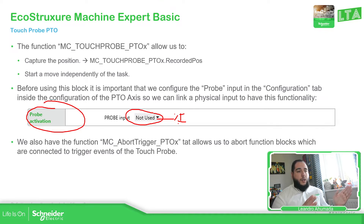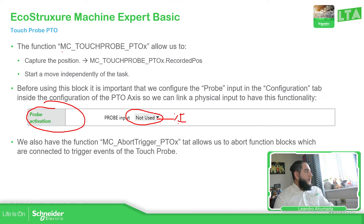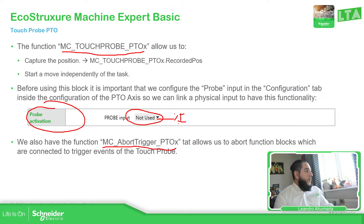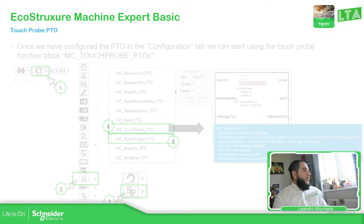When you select the Proof, you can specify which action you can do when it reaches or not. Along with this MC Touch Proof underscore PTO, which is the function for the Touch Proof, you have the Abort Trigger. In case there is an error or something you don't want, if you don't want to enable the Touch Proof, you can abort the operation.